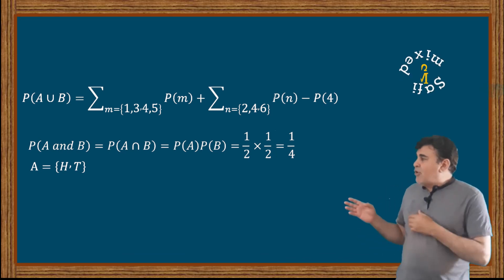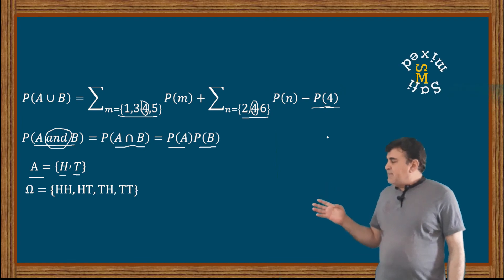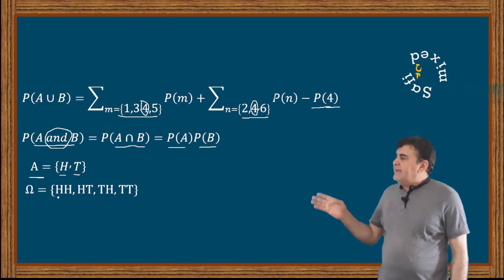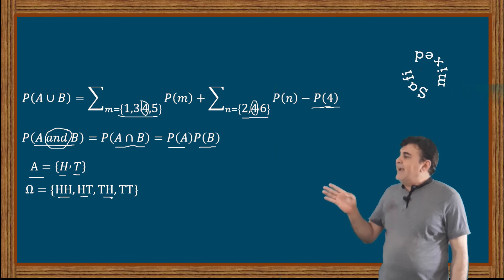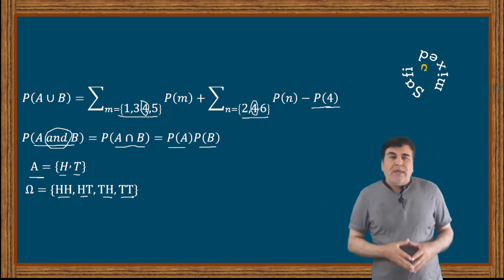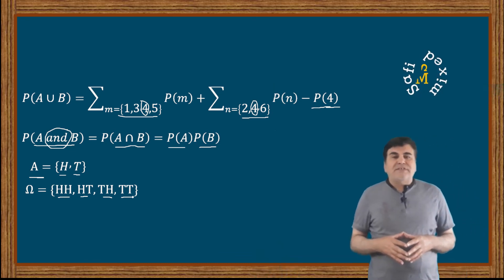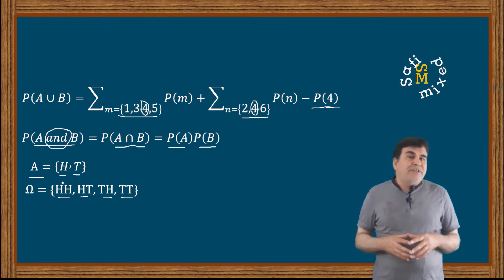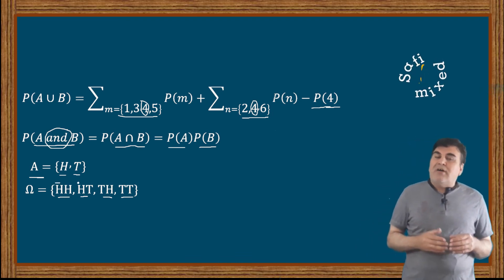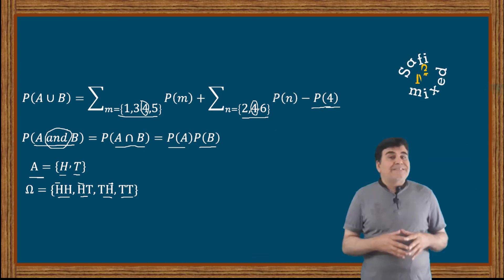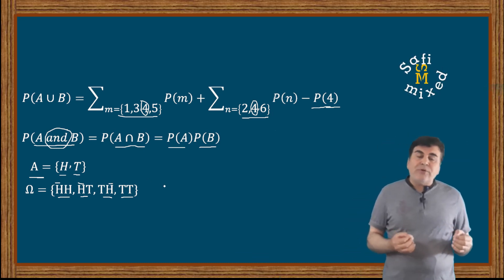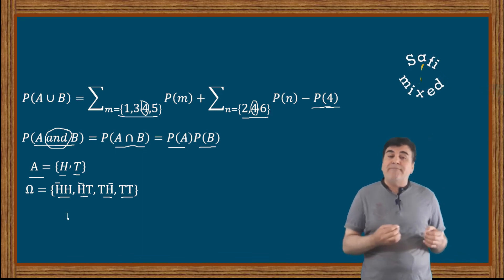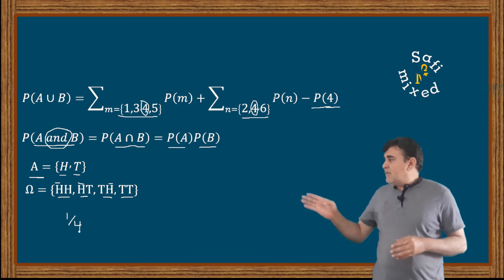We can conceptually understand this by constructing a composite sample space of all possible outcomes of two tosses of a coin. It takes the form Ω = {HH, HT, TH, TT}, meaning the sample space consists of four outcomes. In each pair, the first entry represents the outcome of the first toss and the second entry represents the outcome of the second toss. Since there are four equally probable outcomes, the joint probability of each outcome is 1/4, which agrees with the result of the equation.